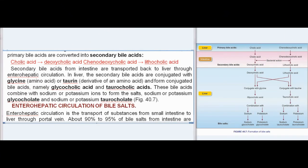Due to bacterial action in the intestine, the primary bile acids are converted into secondary bile acids: cholic acid → deoxycholic acid, and chenodeoxycholic acid → lithocholic acid. Secondary bile acids from the intestine are transported back to the liver through enterohepatic circulation. In the liver, secondary bile acids are conjugated with glycine or taurine to form conjugated bile acids — glycocholic acid and taurocholic acid. These combine with sodium or potassium ions to form bile salts.